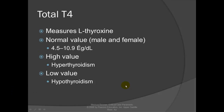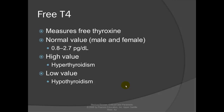T4 measures L-thyroxine. Normal values are 4.5 to 10.9. A high value indicates hyperthyroidism — too much thyroid hormone. A low value indicates hypothyroidism — not enough thyroid hormone.